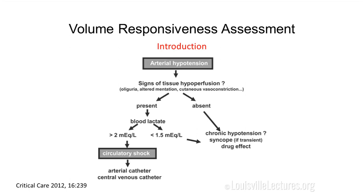Starting with the definition of shock: shock is when you have arterial hypotension with signs of hypoperfusion. The main signs of hypoperfusion include oliguria, altered mental status, and cutaneous vasoconstriction — that is the triad of clinical manifestations of shock. If these signs are present, you measure blood lactate. If the blood lactate is high, you definitely have circulatory shock. If the blood lactate is low, you could still have it, and you have to monitor the patient.